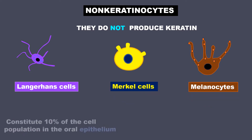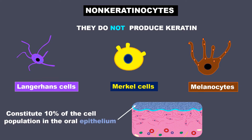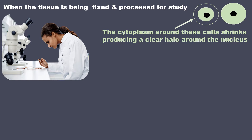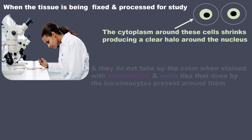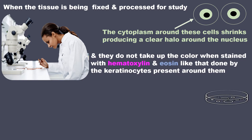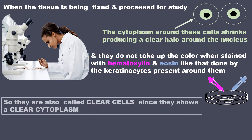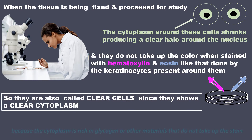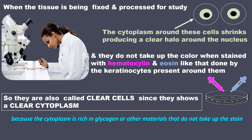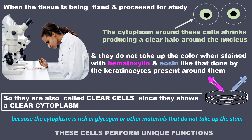They constitute 10% of the cell population in the oral epithelium. When the tissue is being fixed and processed for study, the cytoplasm around these cells shrinks, producing a clear halo around the nucleus. These cells do not take up the color when stained with hematoxylin and eosin like that done by keratinocytes present around them. So they are also called clear cells since they show a clear cytoplasm. This is because the cytoplasm is rich in glycogen or other material that do not take up the stain.